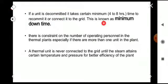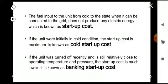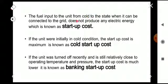If a unit is decommitted — that is, not in operation mode — it takes a certain minimum time, typically 4 to 8 hours, to recommit it or connect it back to the grid. This time is called minimum downtime. There is also a constraint on the number of operating personnel in thermal plants, especially if there are more than one unit. A thermal unit is never connected to the grid until the steam attains a certain temperature and pressure. The fuel input to the unit from cold state to when it can be connected to the grid does not produce any electric energy, which is known as the startup cost.